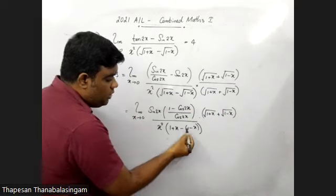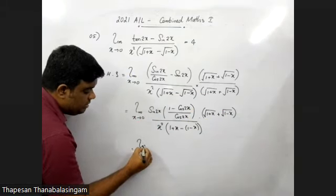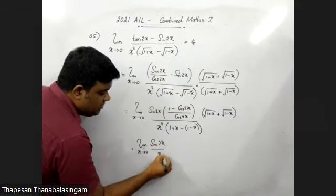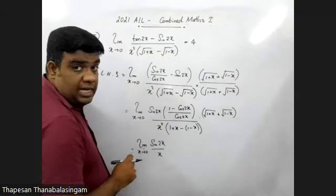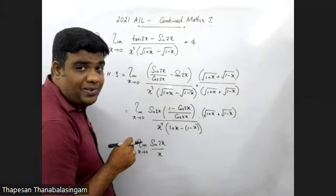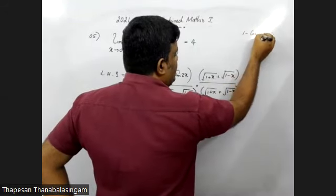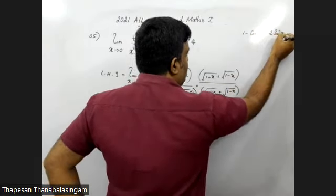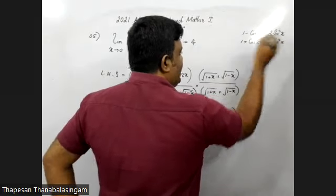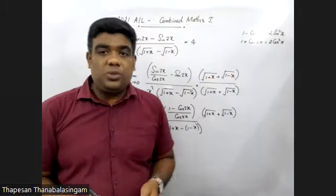The root of root of 1x minus sin 2x. X tends to 0, sin 2x over this is 1 minus cos 2x. In this trigonometry there is one small idea: 1 minus cos 2x is 2 sin squared x. Also, 1 plus cos 2x is 2 cos squared x.